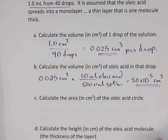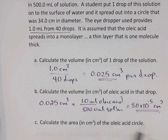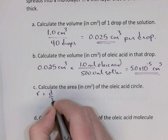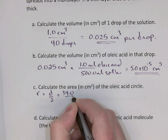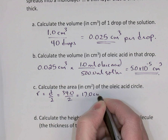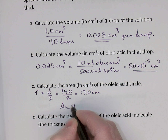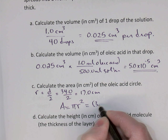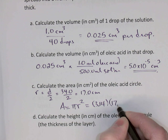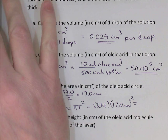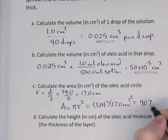What was the area of the circle produced by the oleic acid? Its diameter was 34 centimeters, so the radius is 34 divided by 2 — 17 centimeters. Using the formula for the area of a circle, pi times radius squared: 3.14 times 17 centimeters squared gives us 907 square centimeters.